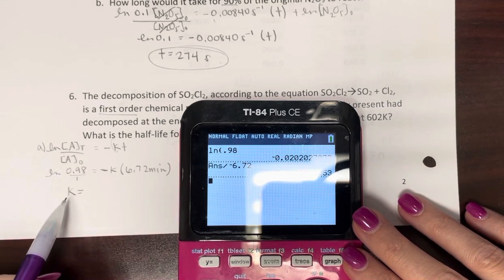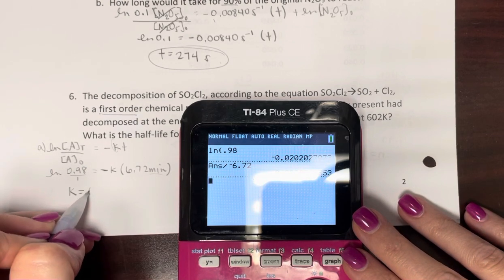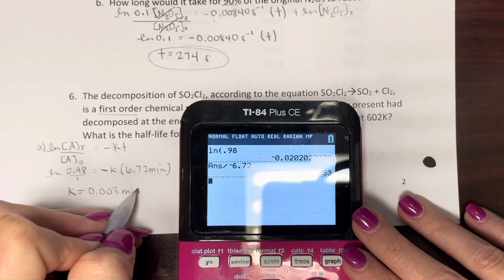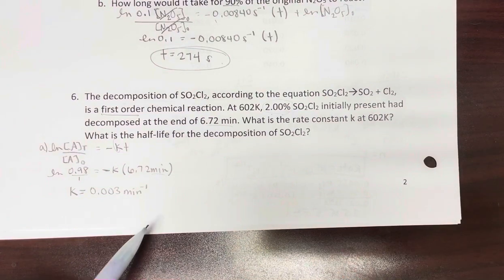And when we do that, we're going to divide by minutes. So we get k equals 0.003, and that's going to be inverse time. So minutes is fine. It could be hours, it could be years.